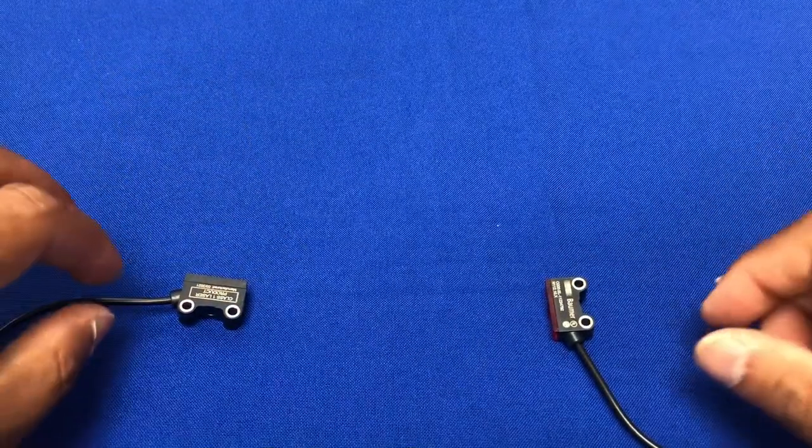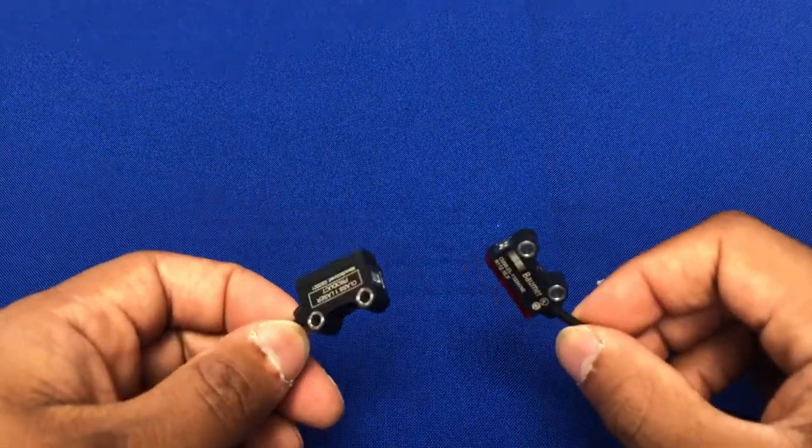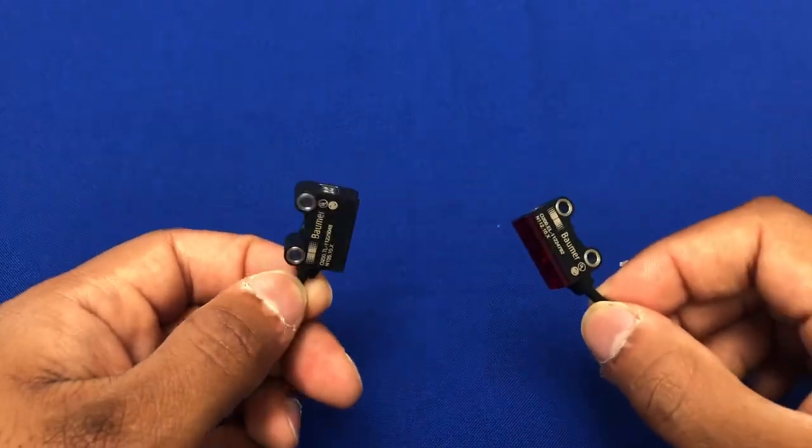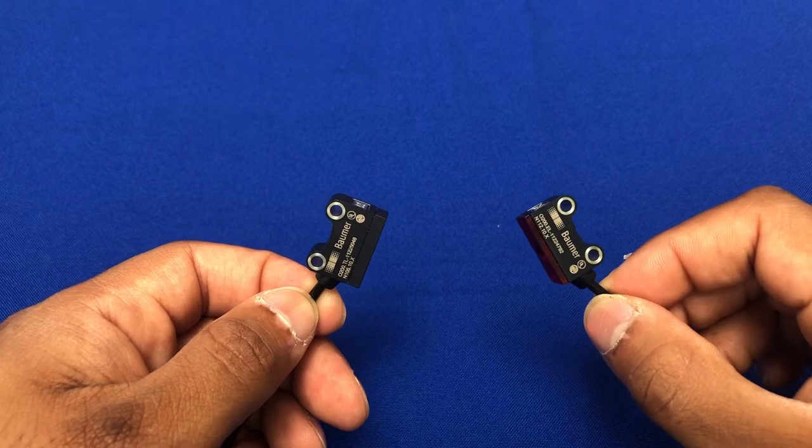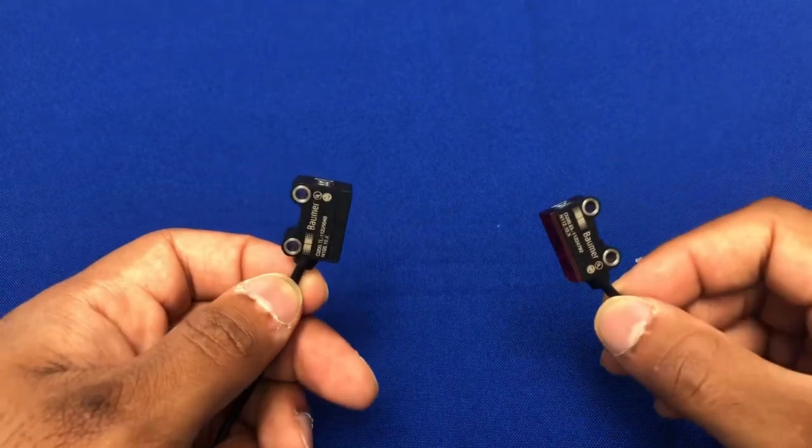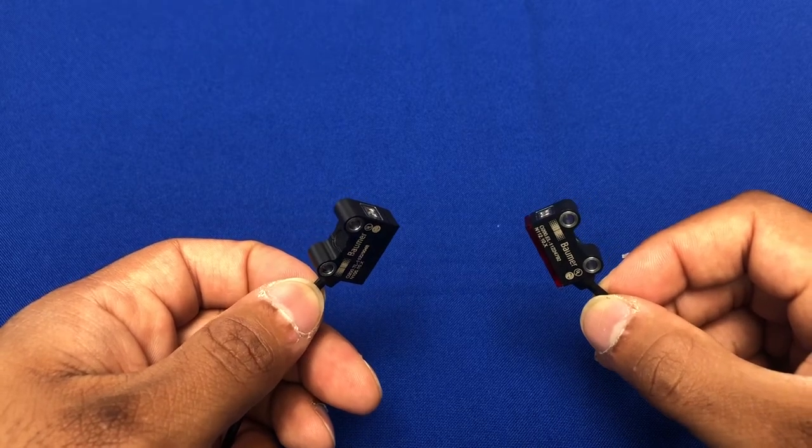To summarize, the Baumer laser 0200 through beams are a great solution for simple part presence detection on a through beam setup. You can do up to six meters worth of detection, so have these six meters apart. You've got a nice small beam spot allowing you to detect very small objects.